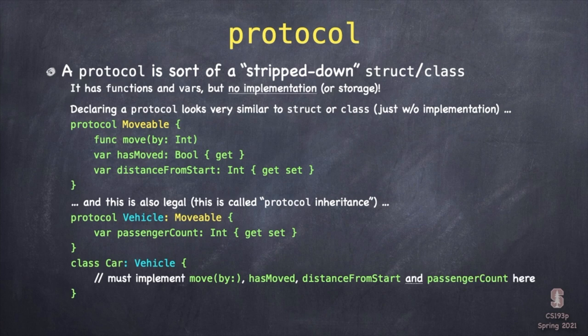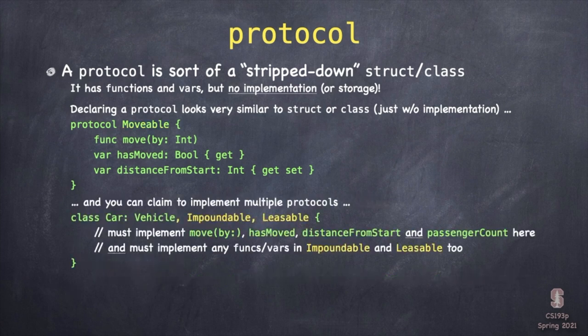It's also legal to create other protocols that require conformers to also implement the vars and functions of another protocol. For example, protocol Vehicle requires Movable. So anyone who wants to implement Vehicle — like this Car at the bottom — has to implement not only the passengerCount var inside the Vehicle protocol, but also all the vars and functions in the Movable protocol. We call this protocol inheritance. There's no reason you can't sign up to implement multiple protocols — a Car might be implementing Vehicle, but also Impoundable and Leaseable. It has to implement all the vars and functions in all of those.